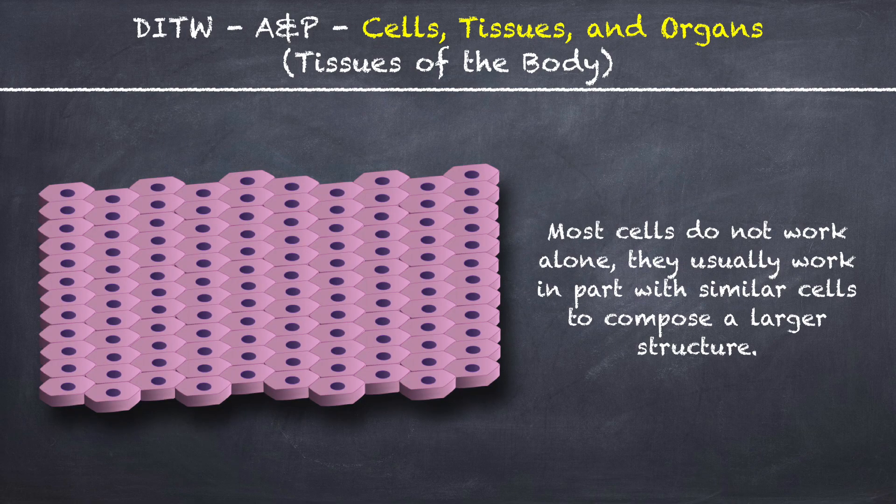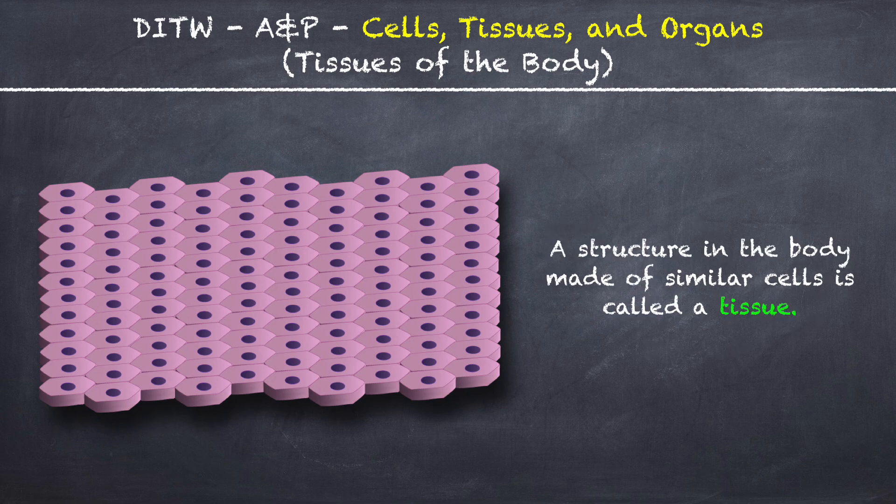Most cells do not work alone. They usually work in part with similar cells to compose a larger structure. A structure in the body made of similar cells is called a tissue.